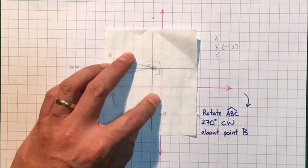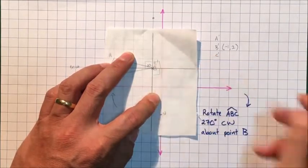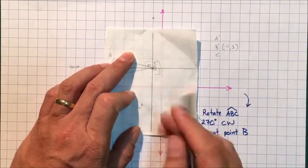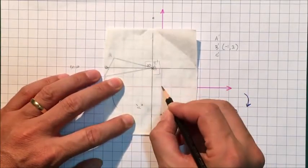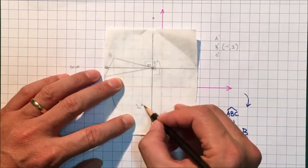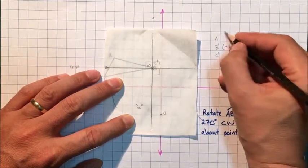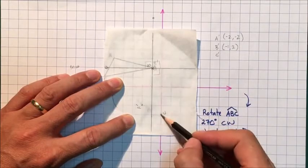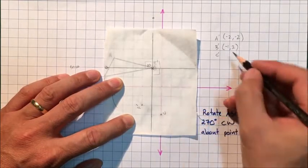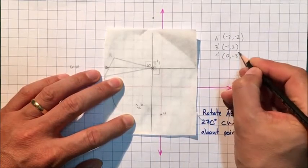A' will be... zero, zero, one, two, one, two... so it'll be (-2, -2). And C is here, zero, one, two, three, so C' is (0, -3). Take those away, and all I have to do is plot these points.